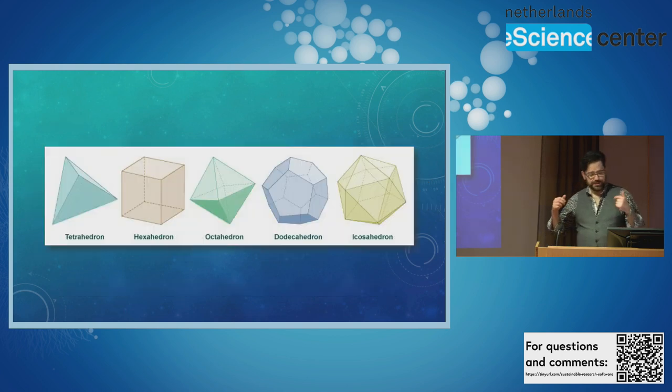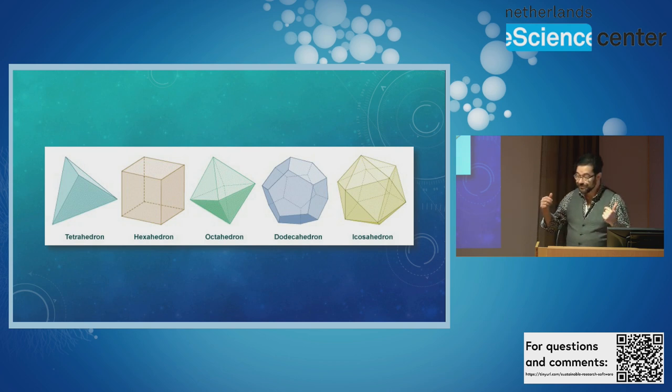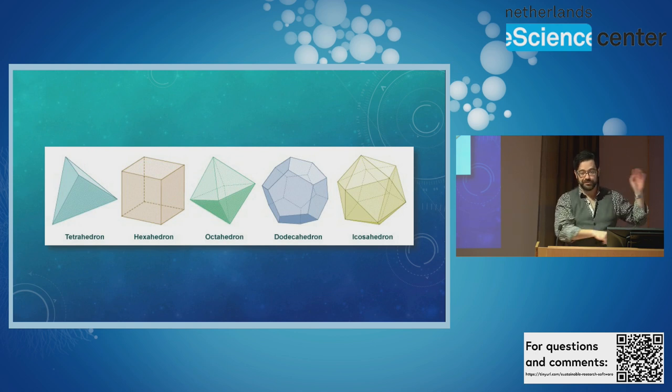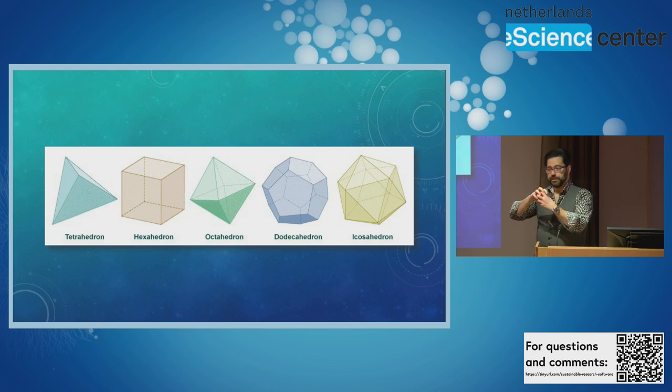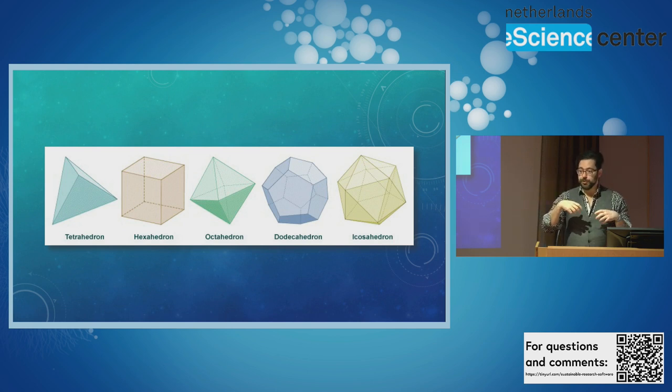A lot of DGGSs start with a platonic solid, right? This is old ancient philosophical mathematics about these ideal shapes and whatnot. An icosahedron is a frequent choice, actually, especially with the ones that try to go for equivalent area. But these platonic solids, one of the things about them is that they can all be inscribed in a sphere. They all fit perfectly with all of their corners on the surface of a sphere, which is why they're sort of an ideal geometric starting point.